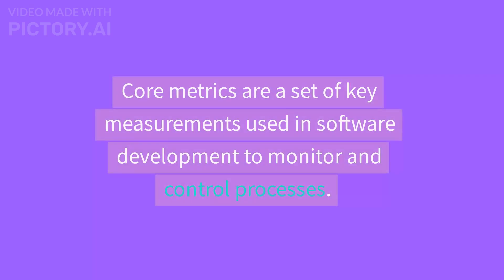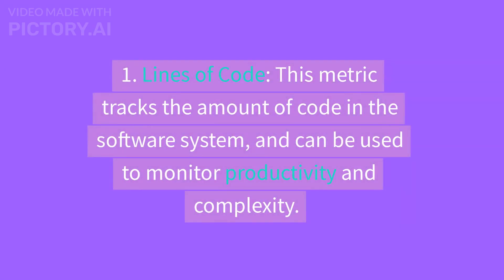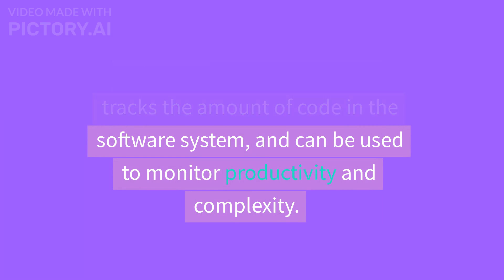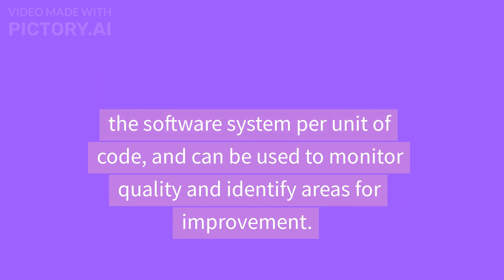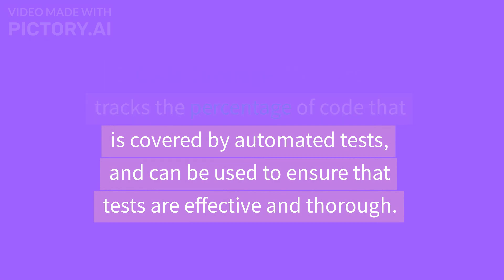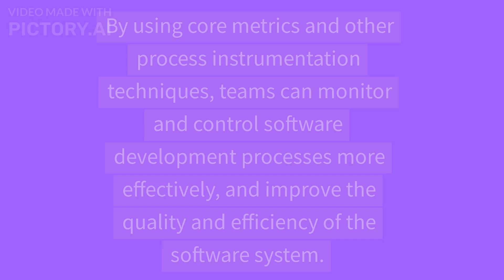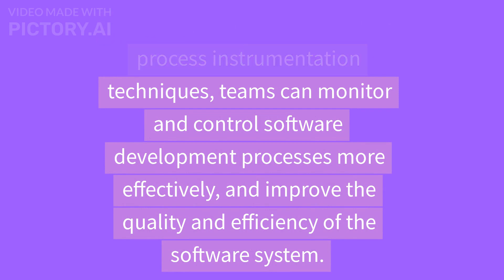Core Metrics are a set of key measurements used in software development to monitor and control processes. Some examples include: 1. Lines of Code — tracks the amount of code in the software system and can be used to monitor productivity and complexity. 2. Defect Density — tracks the number of defects per unit of code and can be used to monitor quality and identify areas for improvement. 3. Code Coverage — tracks the percentage of code covered by automated tests, ensuring that tests are effective and thorough. Using core metrics helps teams monitor and control processes more effectively.